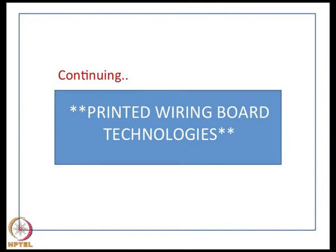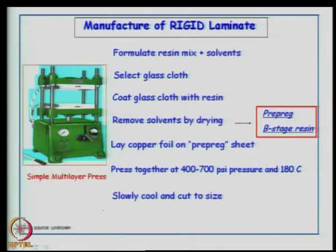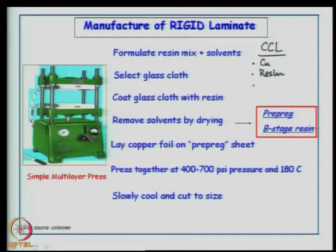We will continue with the chapter on Printed Wiring Board Technologies. So far, we have seen the introduction to this chapter on the fabrication methodologies for printed wiring boards. We have reached a stage where we are discussing organic substrates and we have used the term copper clad laminates to describe the base substrate used for fabricating printed wiring boards. A copper clad laminate, CCL in short, consists of three components: copper, organic resin, and a filler component.